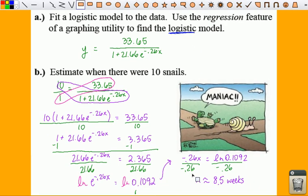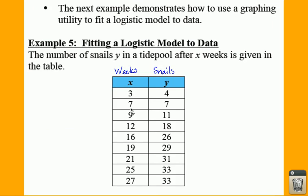That should make a little bit of sense, because if you look at your table for 8.5 weeks and you want 10 snails, well 8.5 would be somewhere in here, which would be between 7 and 11, so that seems to make sense.